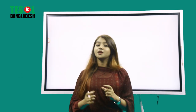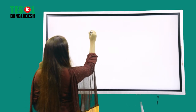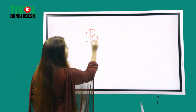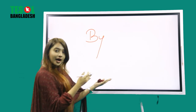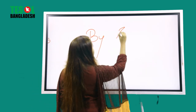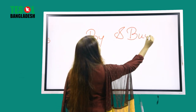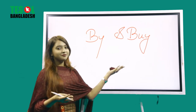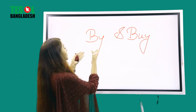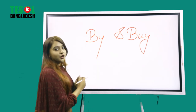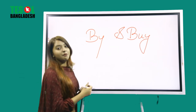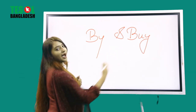There are some words whose meanings are different, but the pronunciation is kinda same. For example, B-Y — 'by' — and B-U-Y — 'buy'. So, these are totally different words, but the pronunciation is kinda same: 'by' and 'buy'.